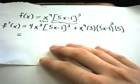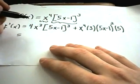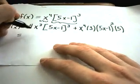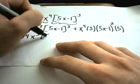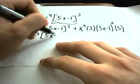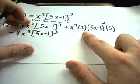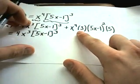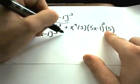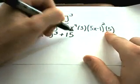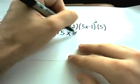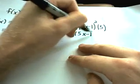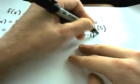At this point we have to clean things up a little bit, and this can be the tricky part. There's really nothing to simplify in the first part, so I'm going to leave that part alone. And I'm going to multiply things out on the right side — notice I have a 3 and a 5, that's going to give me 15. I have x to the fourth still, and then I have a 5x minus 1 squared.